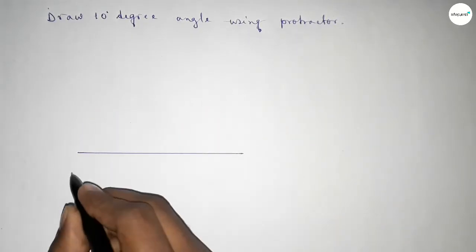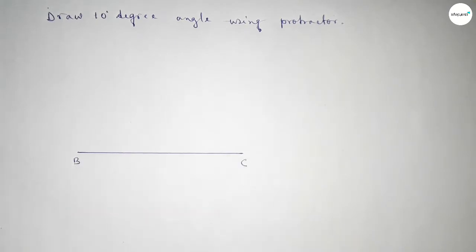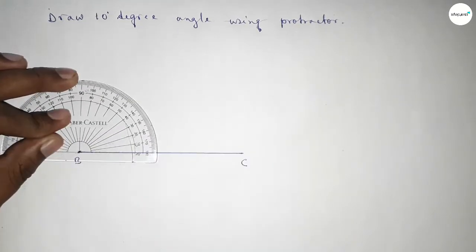Taking here point B and here point C. Now putting the protractor on point B.